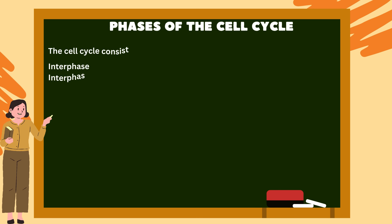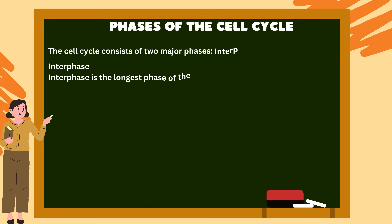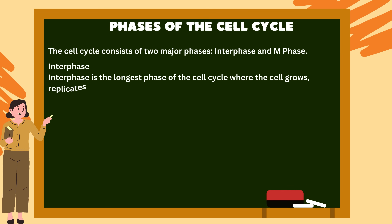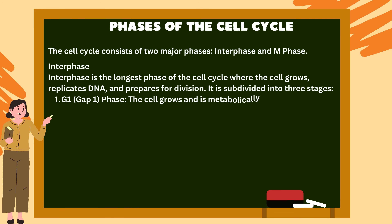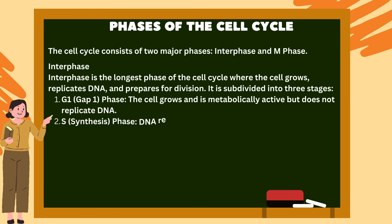Phases of the cell cycle: The cell cycle consists of two major phases — interphase and M-phase. Interphase is the longest phase of the cell cycle where the cell grows, replicates DNA and prepares for division. It is subdivided into three stages.